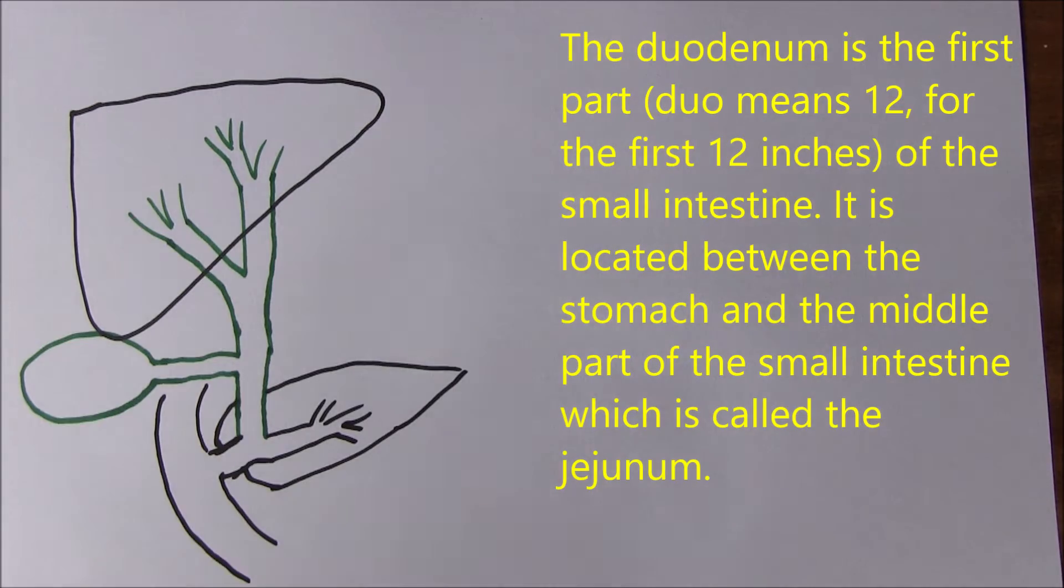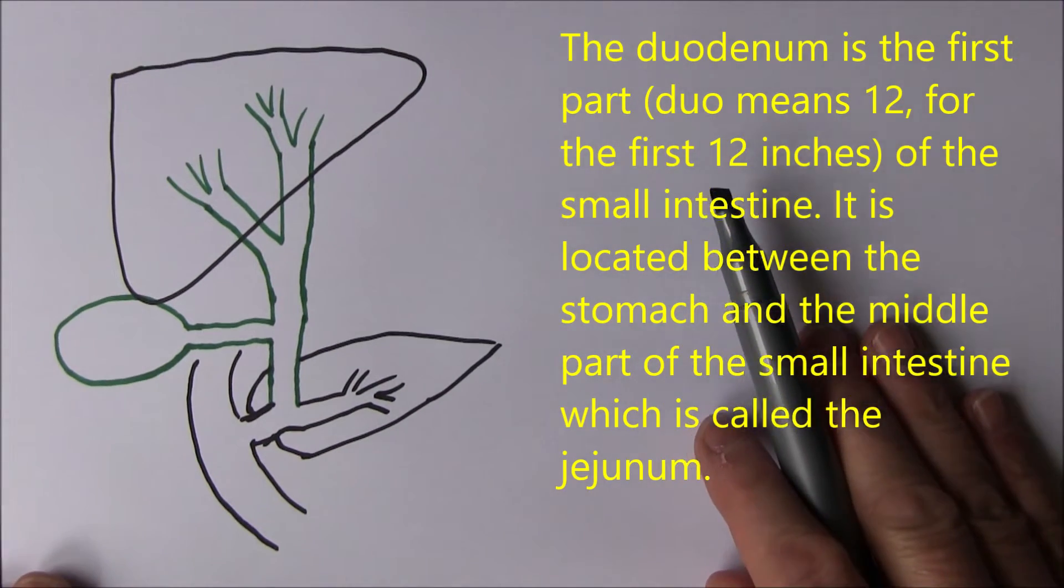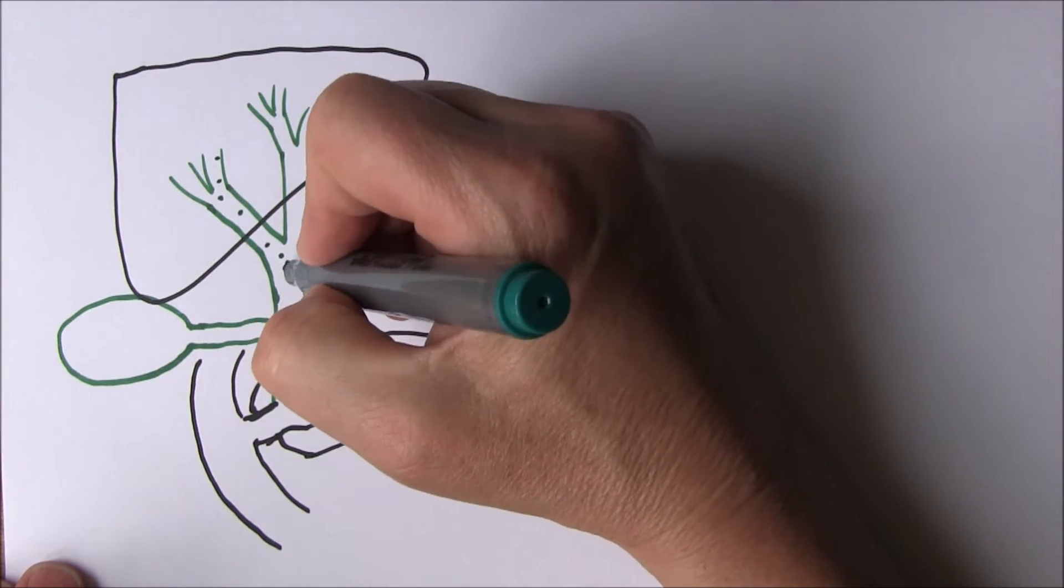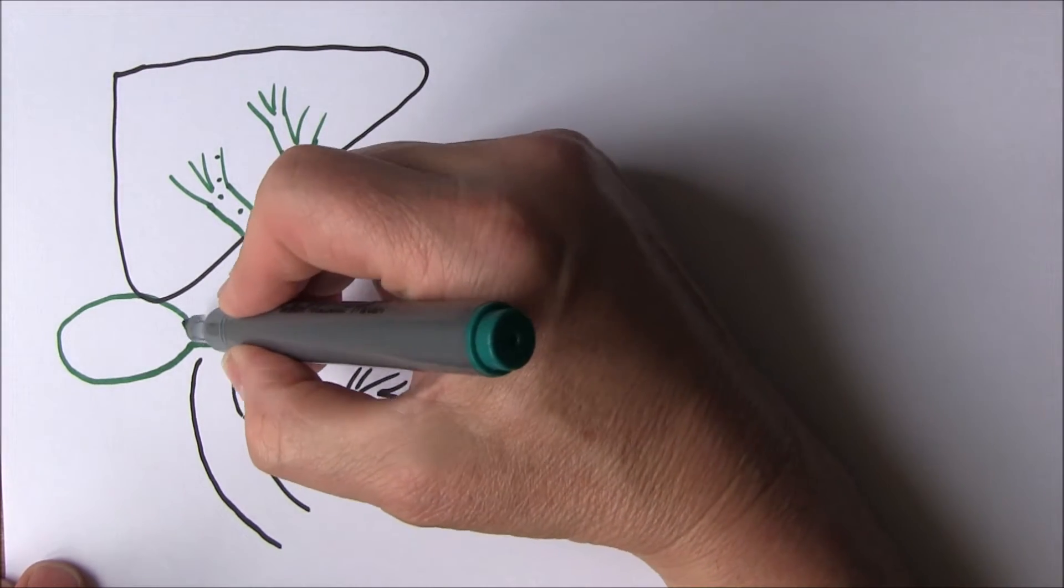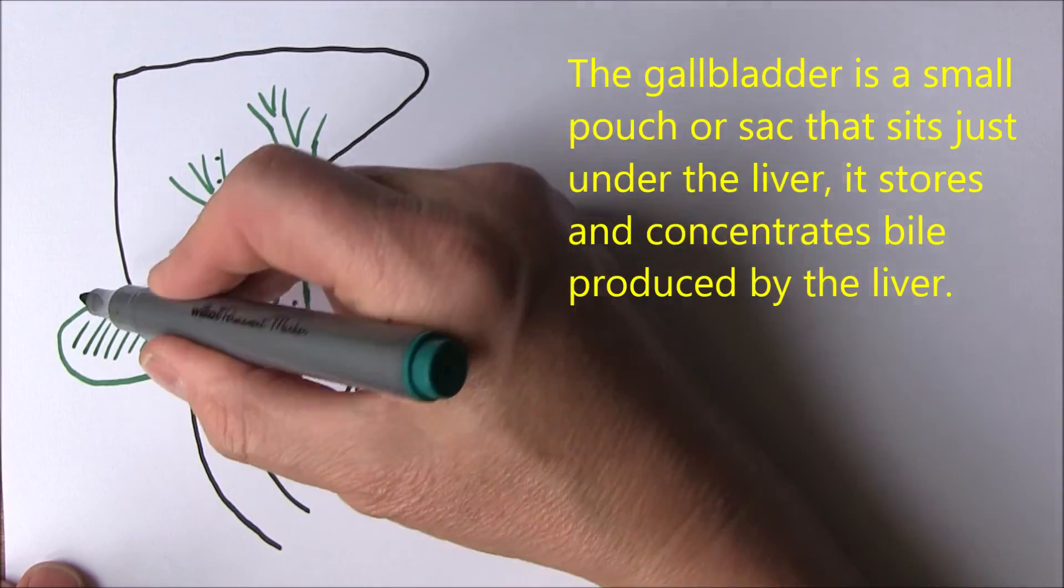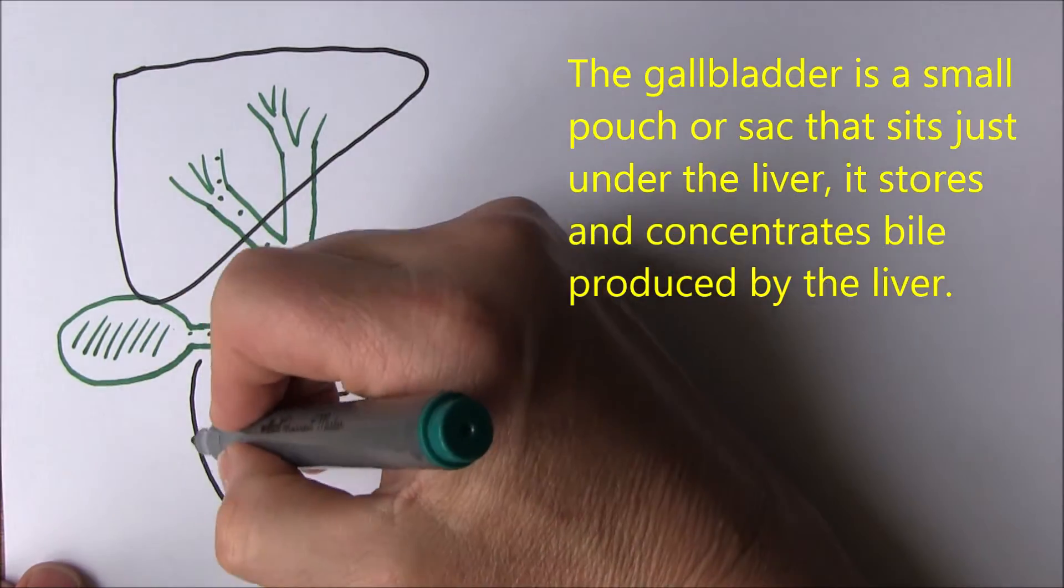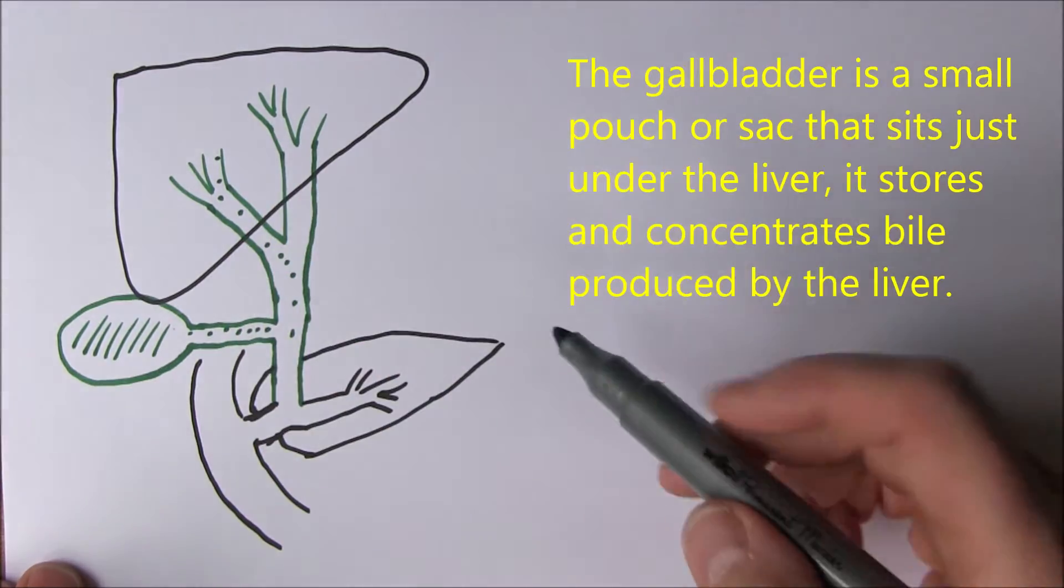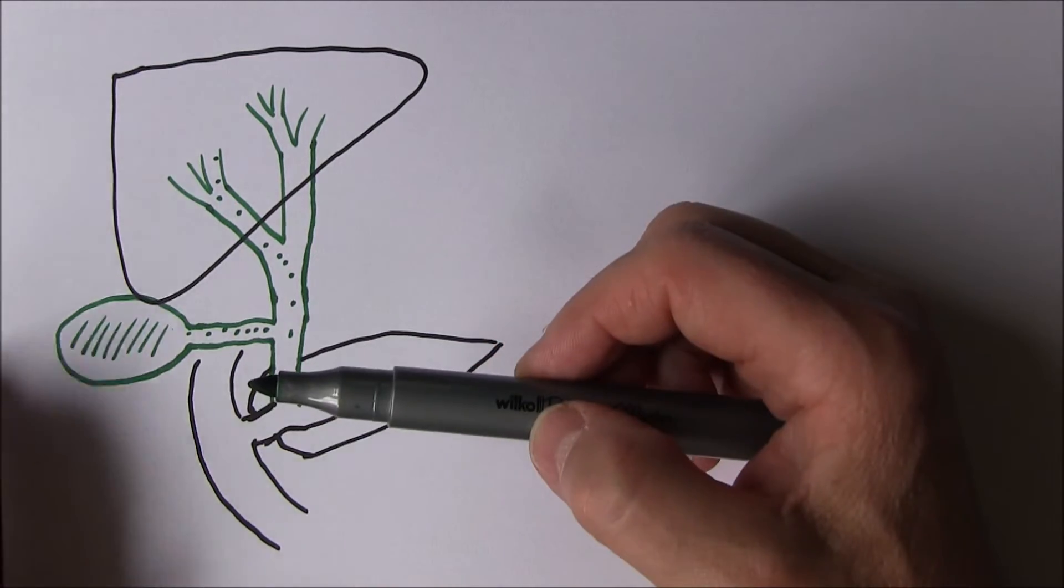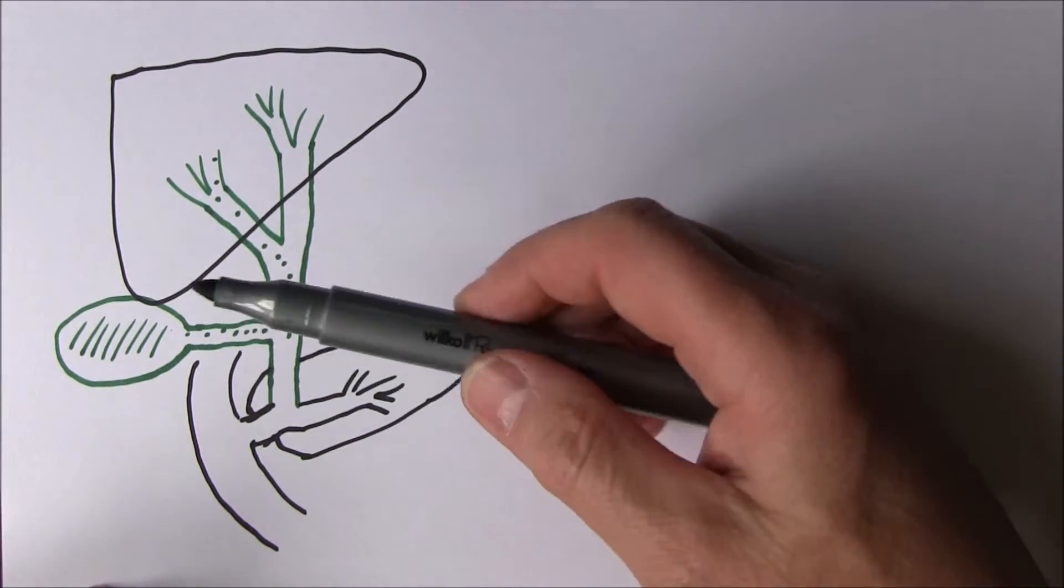This means the bile can go down into the duodenum. When the liver is producing bile, it actually goes down these bile ducts and it goes into the gallbladder via the cystic duct. The gallbladder is storing the bile, waiting for fat to emulsify, but as well as storing the bile, it also concentrates it.